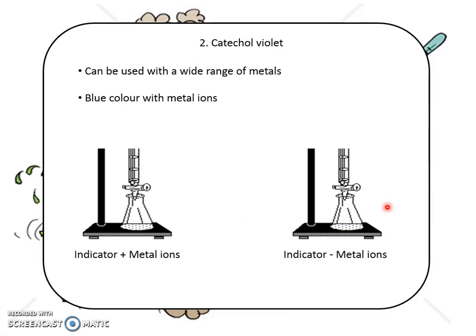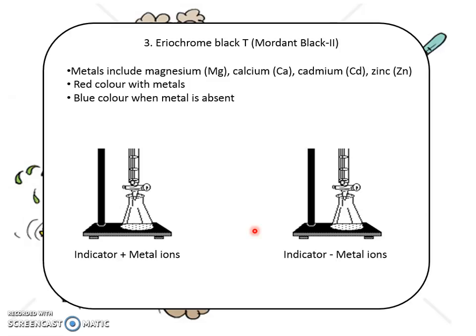Similarly, cathylchol violet is used for a wide range of metals — blue colour indicates metal ions are present, and when complexometric titration is conducted, the metal ions are complexed with EDTA and the colour changes to colourless. The third indicator is Eriochrome Black T, used for metals including magnesium, calcium, cadmium, and zinc. It shows red colour when the metal is present, and after EDTA titration it changes to blue when the metal is absent.